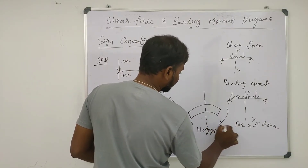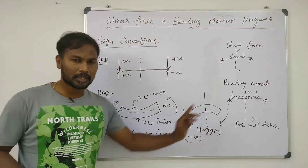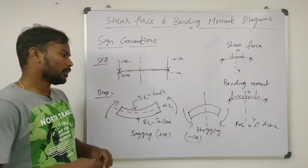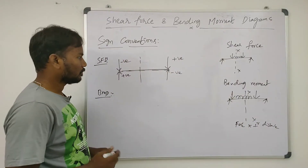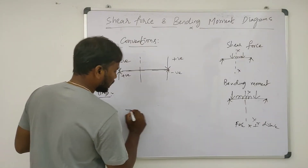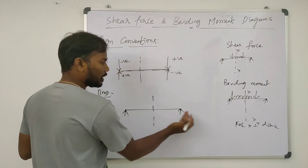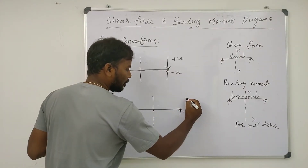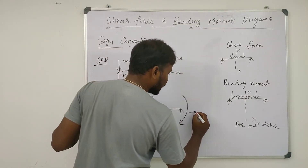Hogging is taken as negative. An easy way to remember: for a simply supported beam, on the right side of the section a clockwise moment creates a certain sign. Right side clockwise moment — take it as negative.